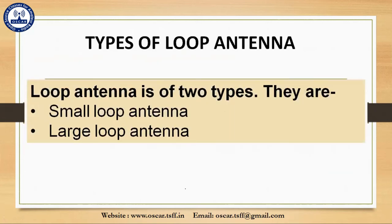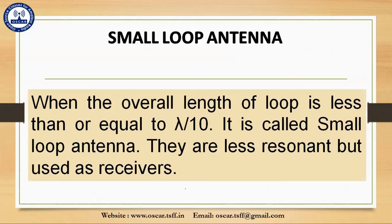Loop antenna is of two types: small loop antenna and large loop antenna. For small loop antenna, when the overall length or circumference of the wire in the loop is less than or equal to lambda by 10, where lambda is the wavelength, it is called a small loop antenna. They are less resonant but act as good receivers.